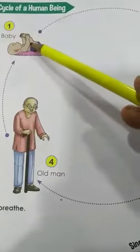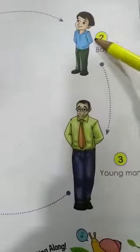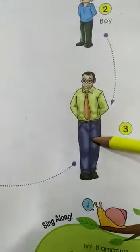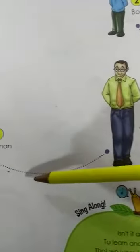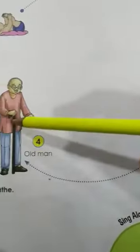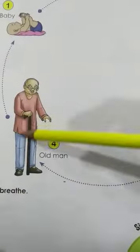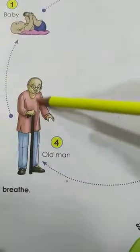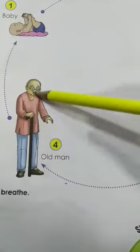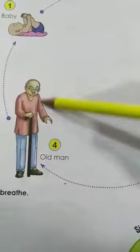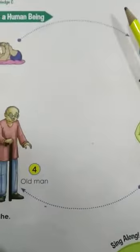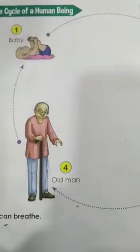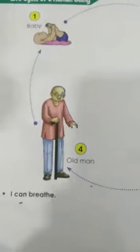That means: first baby, then a child, and from child you become a big man or woman. Then after, when the years pass — after so many years — you will become an old man or old lady. So that is the life cycle of human beings — of us. We all are human beings.